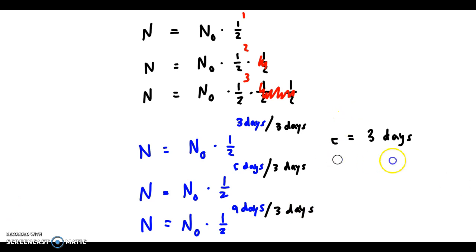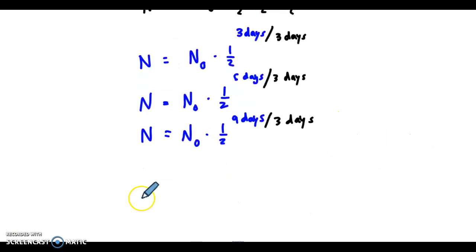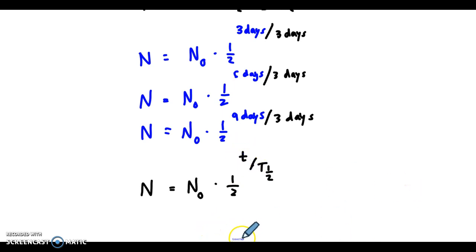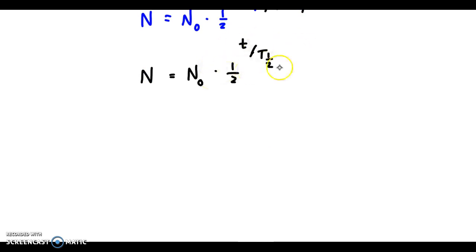So what is the general equation? We're taking how much we start with, n zero, that's the initial amount, multiplying by a half, raising it to the power of the time that passes, divided by the half-life. Little t, the time that passes, over the half-life.